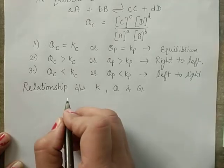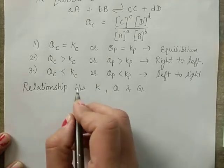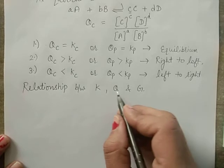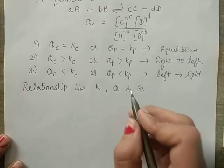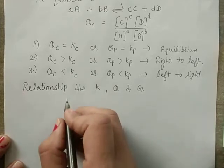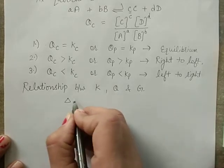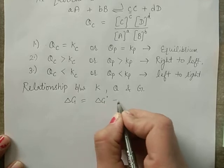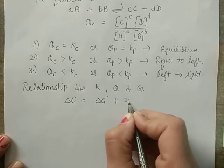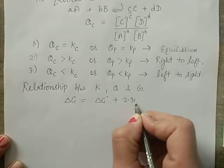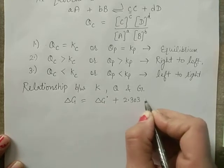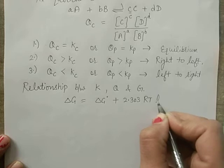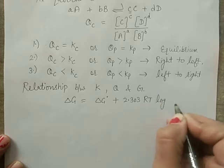The relationship between Gibbs free energy and the reaction quotient is given by: ΔG = ΔG° + 2.303 RT log Q.